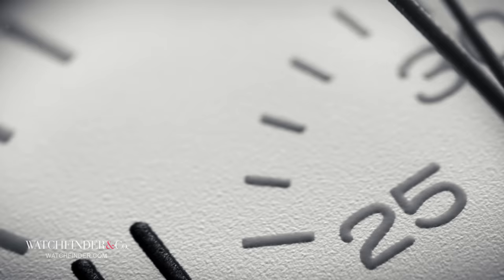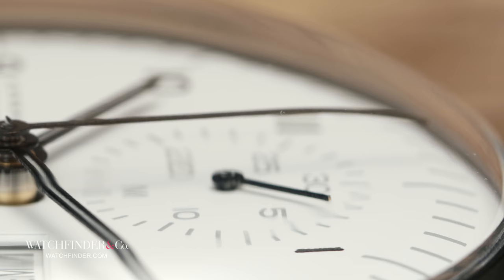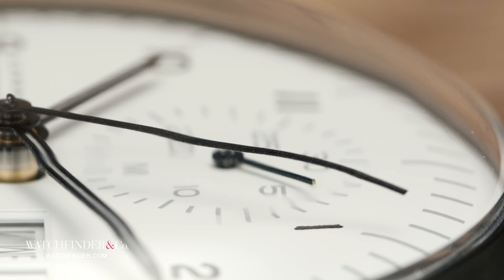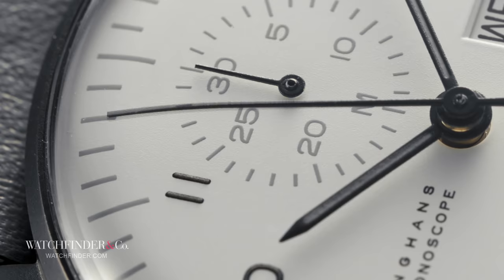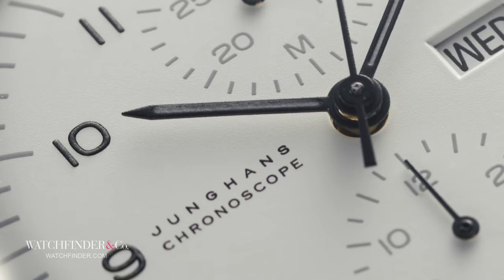But unfortunately, all good things had to come to an end. That terrible thing that happened between 1939 and 1945 got rather in the way of Junghans' operations, and so the watchmaker had to put things on hold for a while, relinquishing its factory and tools in the process. It started again from the ground up, purchasing new machines in a journey of much-needed modernization.